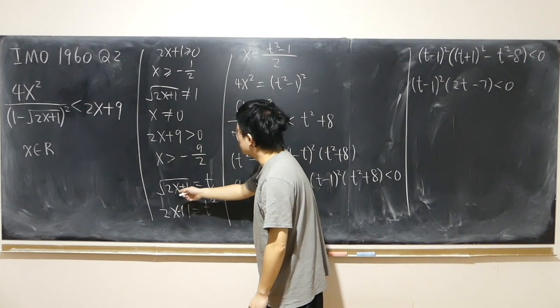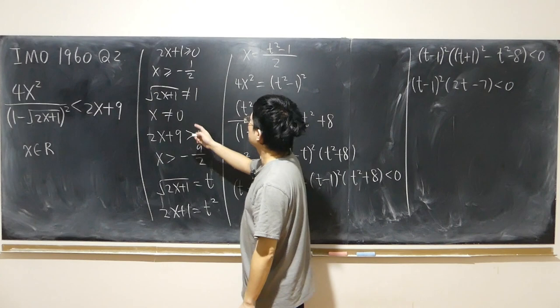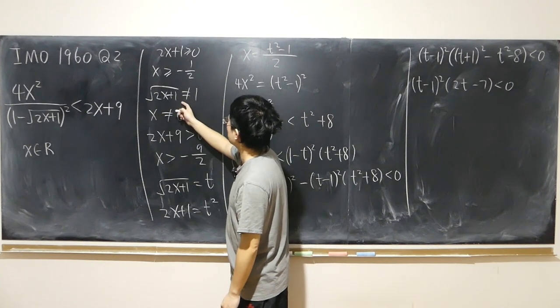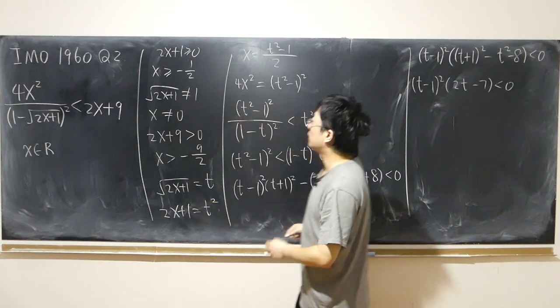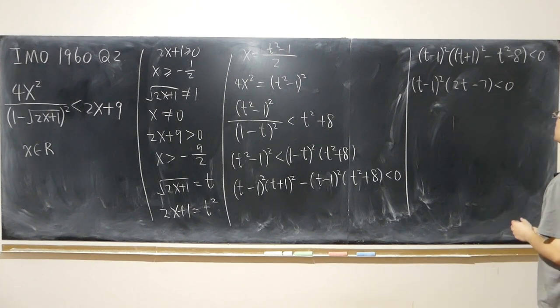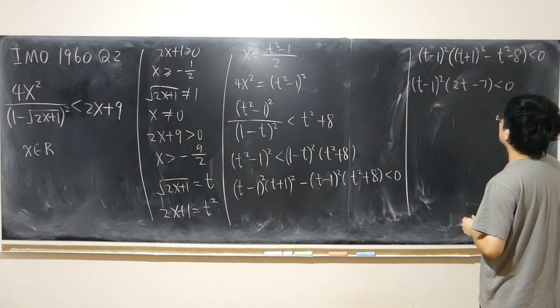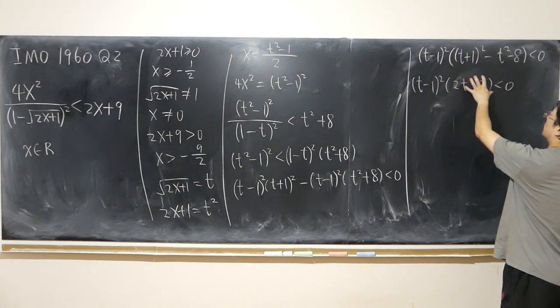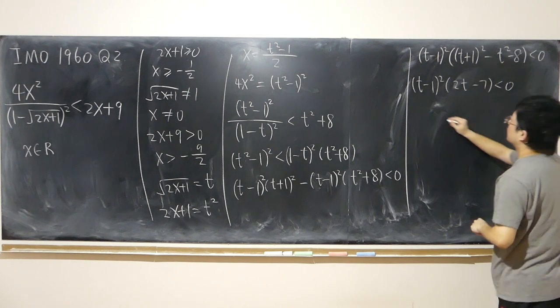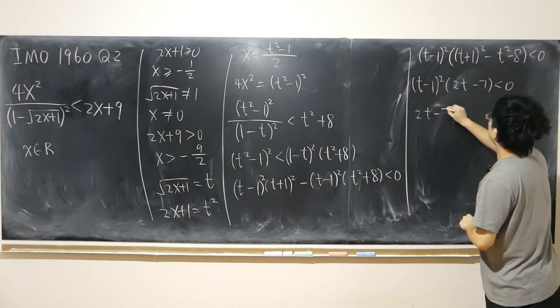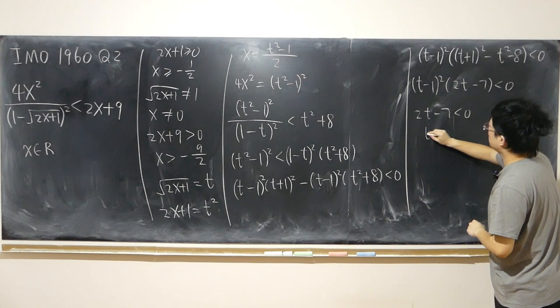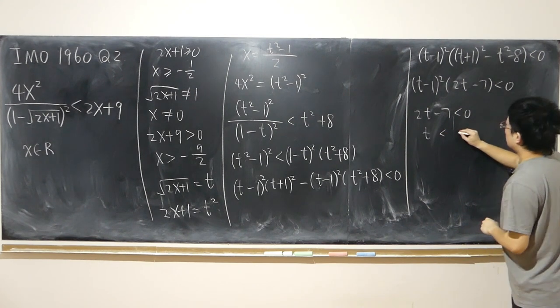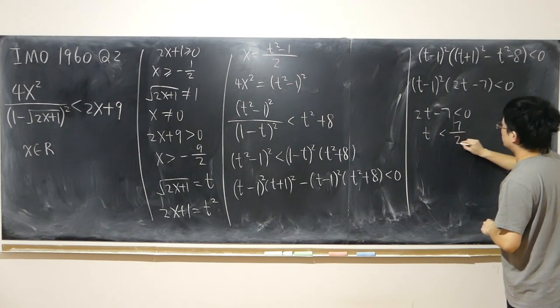So this cannot equal to 1. Like I said previously, I already know this cannot equal to 1. So this is fine. So which means this part must be strictly negative. Which means t must be strictly less than 7 over 2.